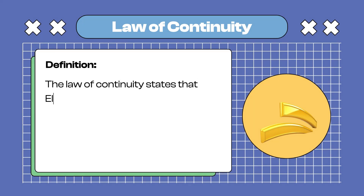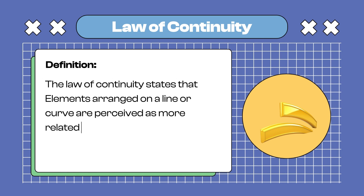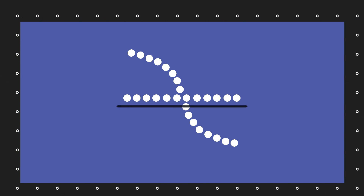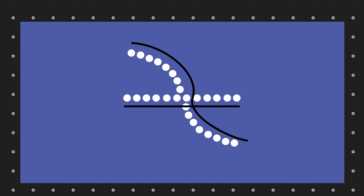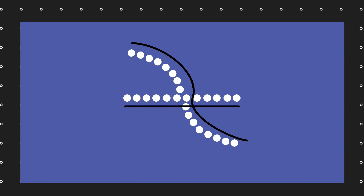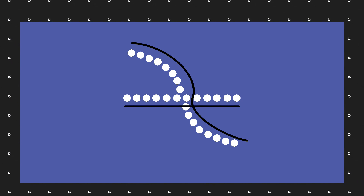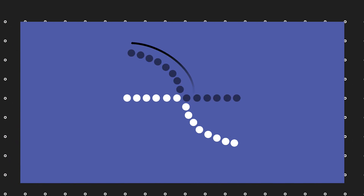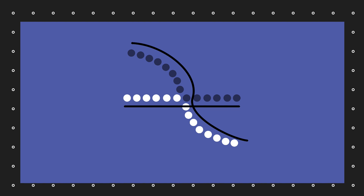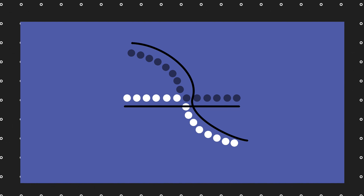Fifth: The Law of Continuity. The Law of Continuity states that elements arranged on a line or a curve are perceived as more related and grouped together. Here, we have a series of circles, a straight line, and a curved line. The curve intersects the straight line, and our eyes naturally follow the simplest path.